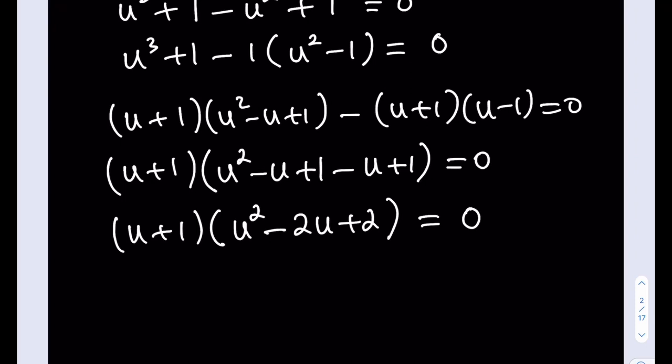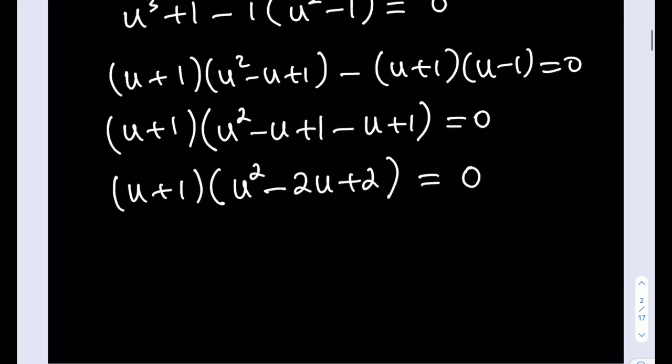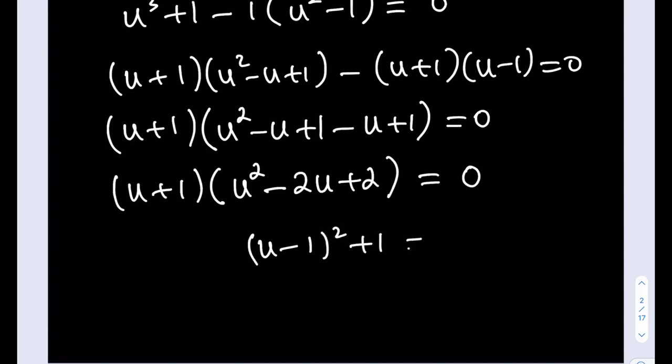Happy birthday to you. Now, if it's somebody's birthday, then it'll be your happy birthday song. From here, we know that u equals negative 1 is a solution, obviously. What is the other one? Well, that's going to be a complex solution because you can write this as u minus 1 quantity squared plus 1. If you set it equal to 0, here comes our famous i. u minus 1 is going to be plus minus i here.